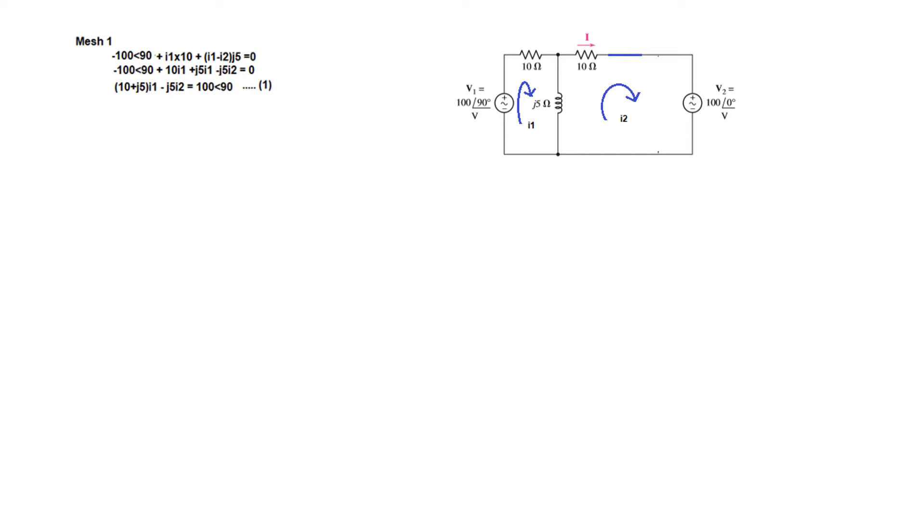Now similarly we write the equation for mesh number two. We start from here. This is touching this terminal first, so this will be positive. So we write positive j5 into I2 minus I1, so it is positive (I2 - I1) into j5. Then we have 10·I2, and then we have this voltage source, so 100∠0° equal to zero. Again, by simplifying and combining the like terms, this will be -j5·I1 + (10 + j5)I2 - 100∠0°. This is the second equation.